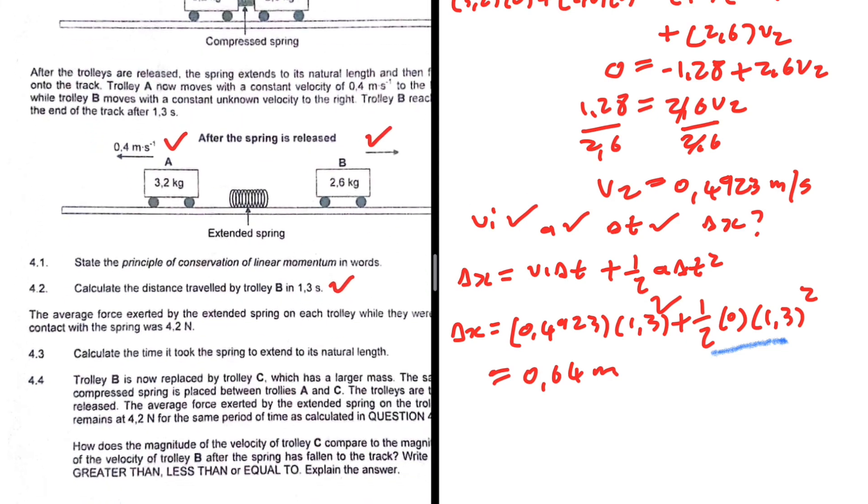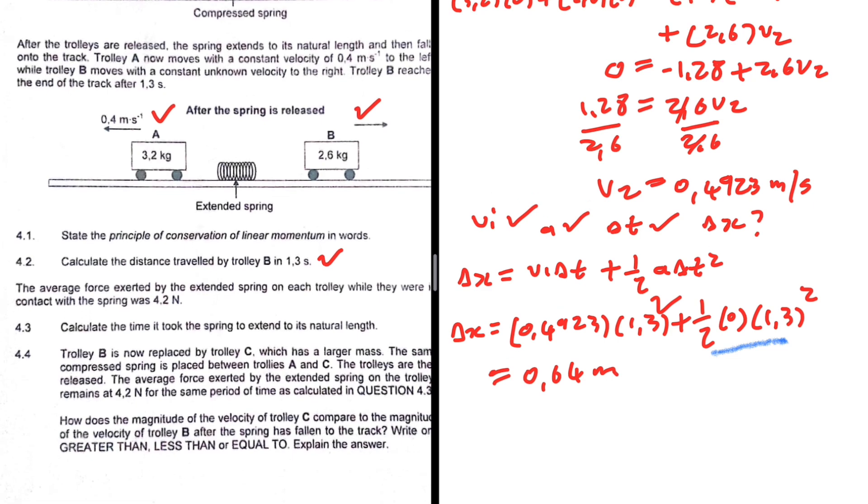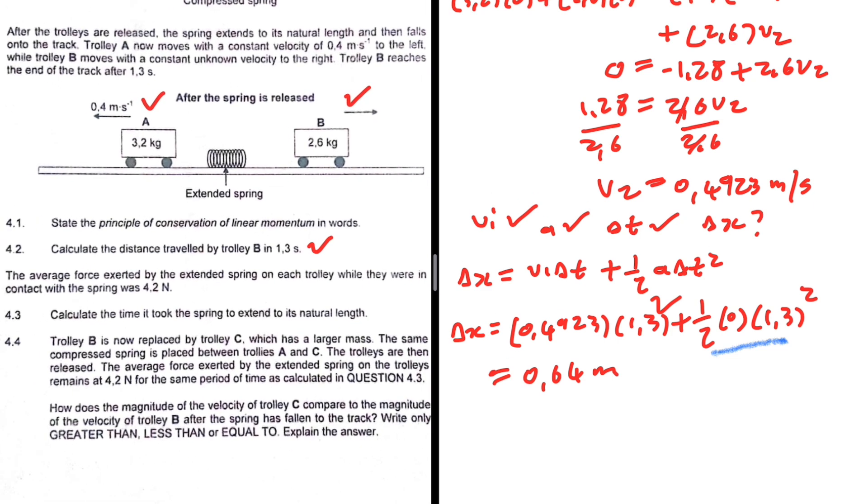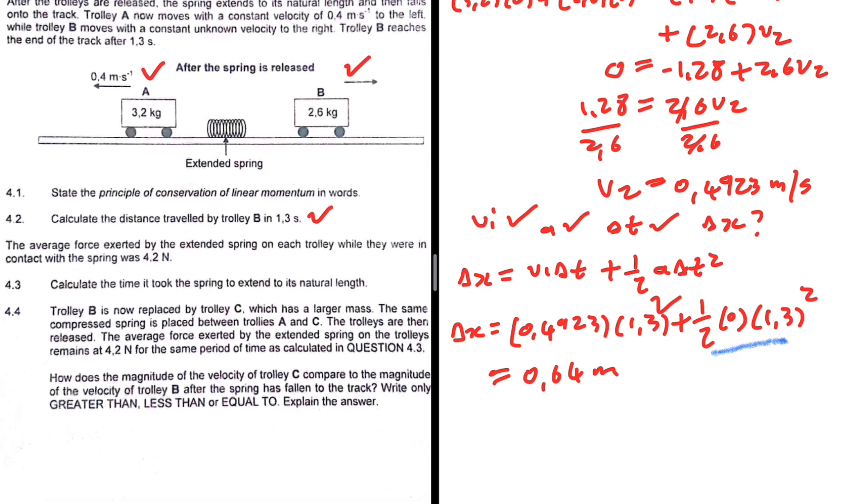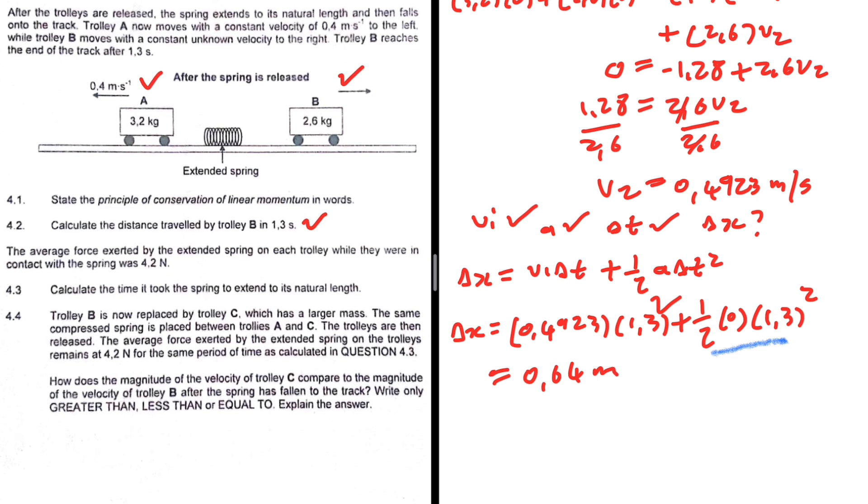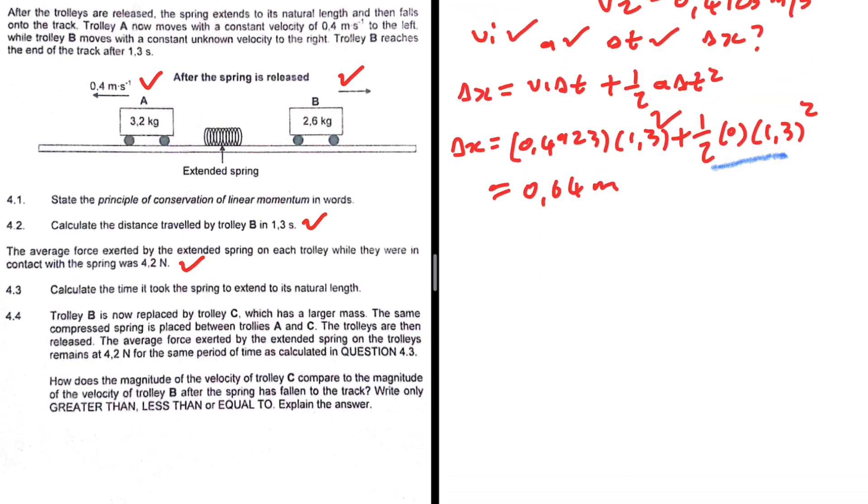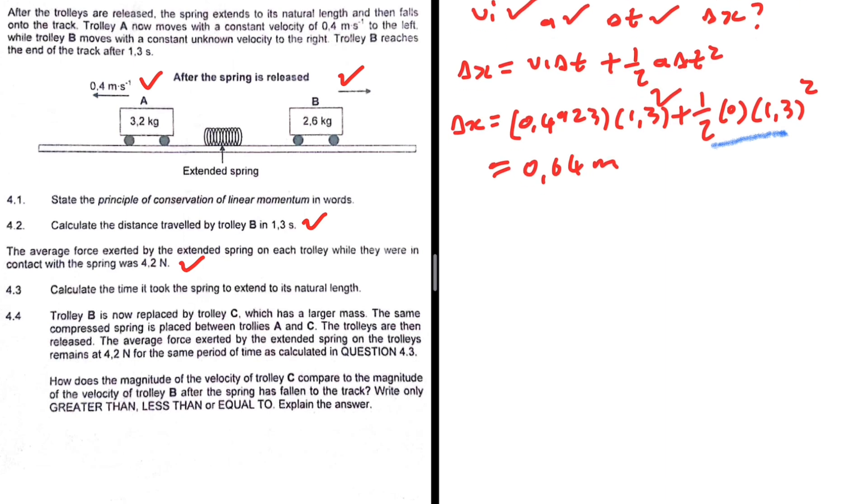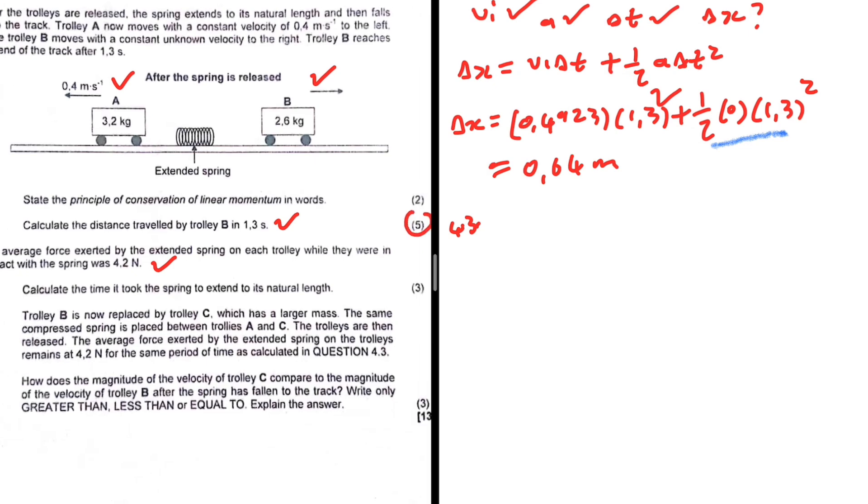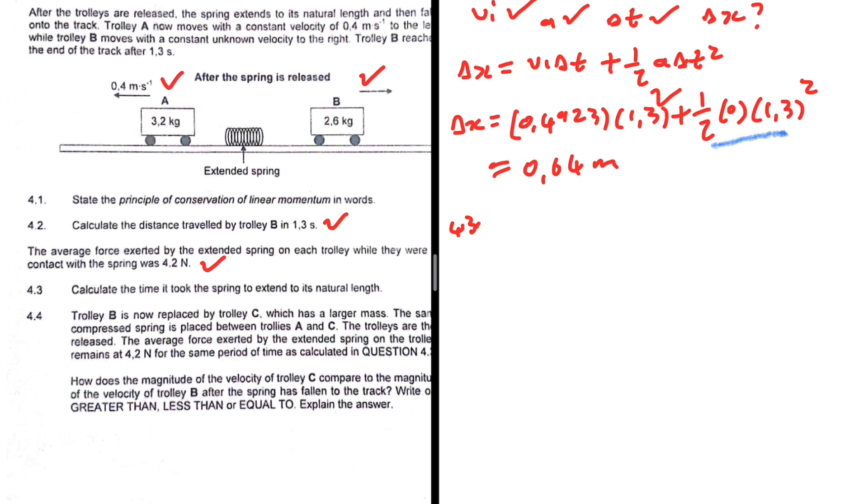I'm getting delta x being equals to 0.64 meters. So there we go, that is the distance traveled by trolley B in 1.3 seconds. Right, then 4.3. Let's take a look: the average force exerted by the extended spring on each trolley while they were in contact with the spring was 4.2 newtons. Okay, then 4.3, calculate the time it took the spring to extend to its natural length—three marks.